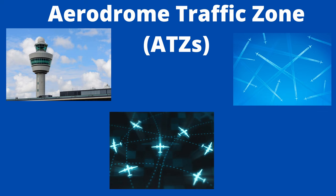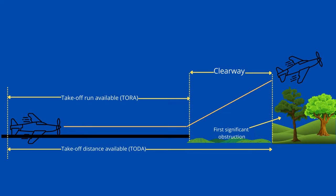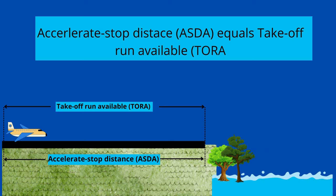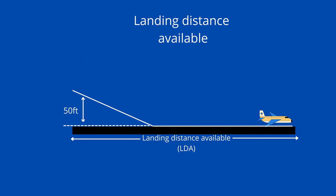Runway Characteristics: declared distances at aerodromes are agreed by the relevant authority in the UK — this is the CAA — and the distances are published in the Aerodrome section of the AIP. Takeoff Run Available (TORA): the length of the runway declared available and suitable for the ground run of an aeroplane taking off. Takeoff Distance Available (TODA): the length of the takeoff run available plus the length of the clearway, if provided. Accelerate Stop Distance Available (ASDA): the length of the takeoff run available plus the length of the stopway, if provided. Landing Distance Available (LDA): the length of runway declared available and suitable for the ground run of an aeroplane landing.